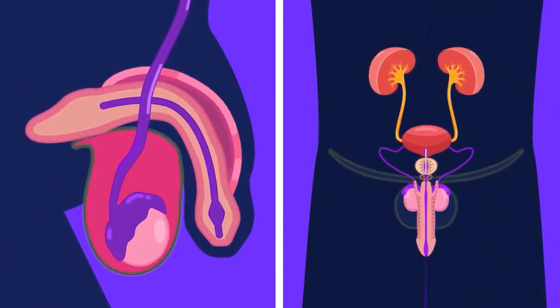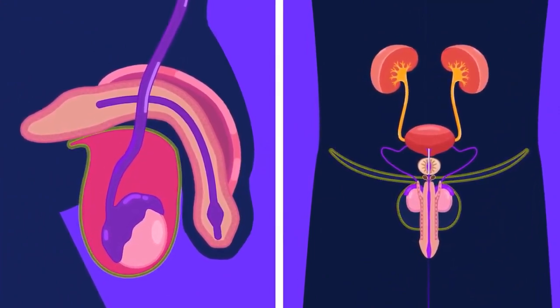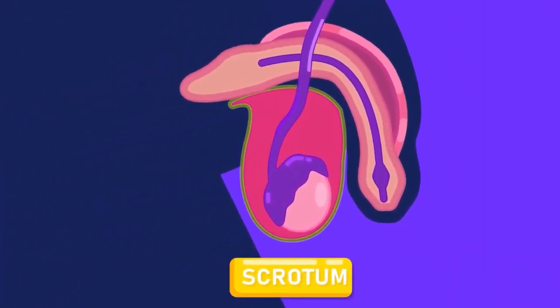The testes lie in a pair of sacs, which are pouch-like extensions of skin between the thighs. These are called the scrotal sacs.